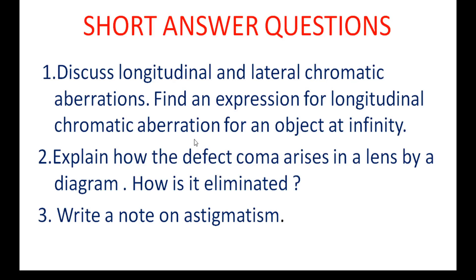For short answer questions: Find an expression for longitudinal chromatic aberration for an object at infinity — object at infinity and object at finite distance are two cases. Next: Explain how the defect coma arises in a lens with a diagram — how is it eliminated? Coma in detail with diagram and minimization method. Also, write a short note on astigmatism. All remaining aberrations — chromatic aberration, spherical aberration, and astigmatism — should be studied in detail.